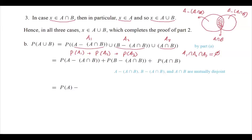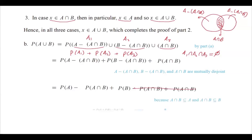This equals P(A) minus P(A∩B), plus P(B) minus P(A∩B), plus P(A∩B). Now doing the algebra and canceling opposite terms, you end up with P(A) + P(B) minus P(A∩B). This completes the proof of the general addition rule for the probability of the union of two events.